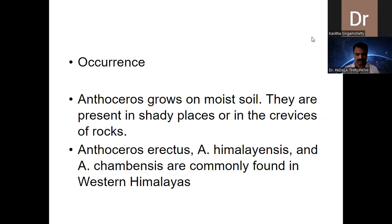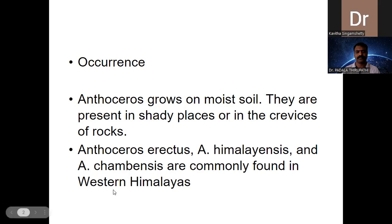Next we are moving on to the habitat — the occurrence where Anthoceros grows. Unlike Marcantia, Anthoceros is also a terrestrial genus — a terrestrial bryophyte growing on moist soil in shady places and in the crevices of rocks or mountains. Important Indian species include Anthoceros erectus, Anthoceros himalayensis, Anthoceros cambensis, etc., commonly found in the western Himalayas region.